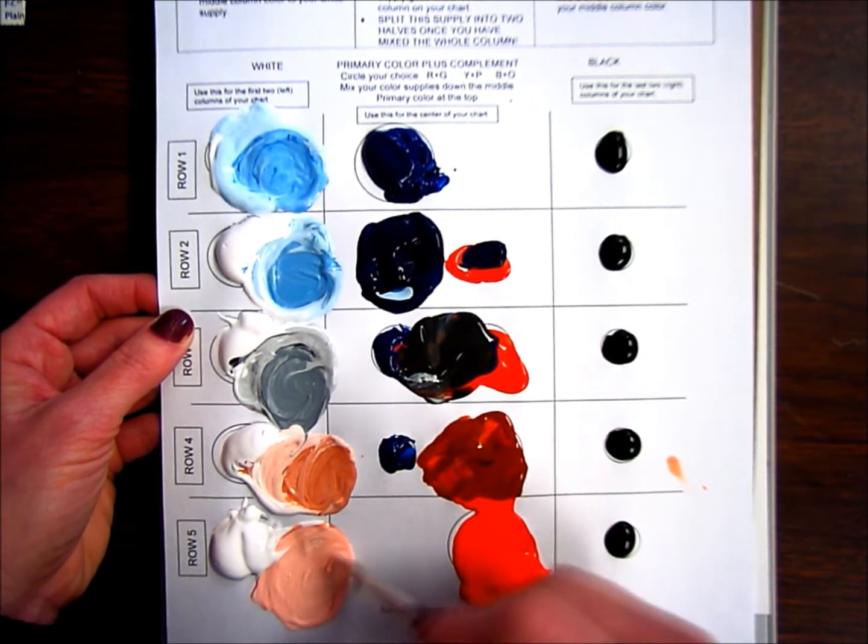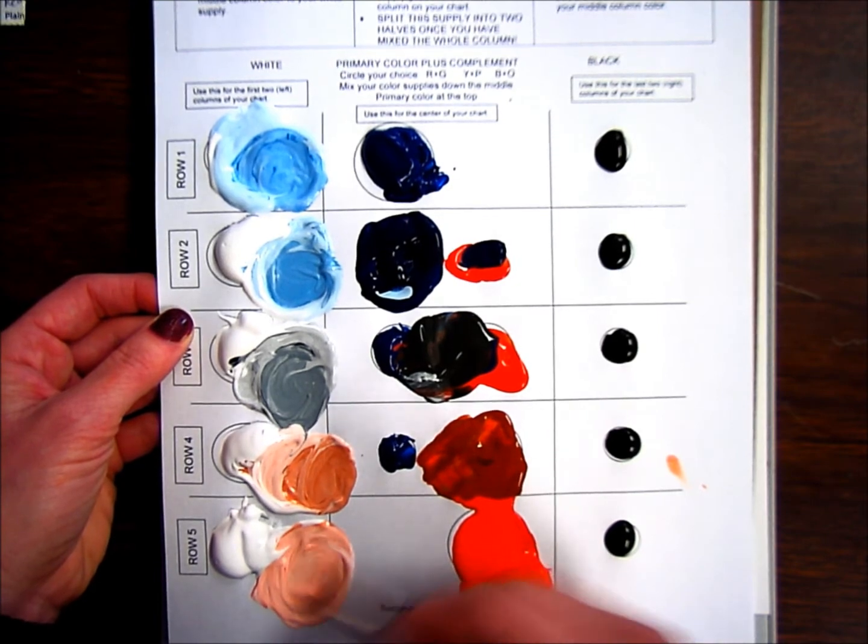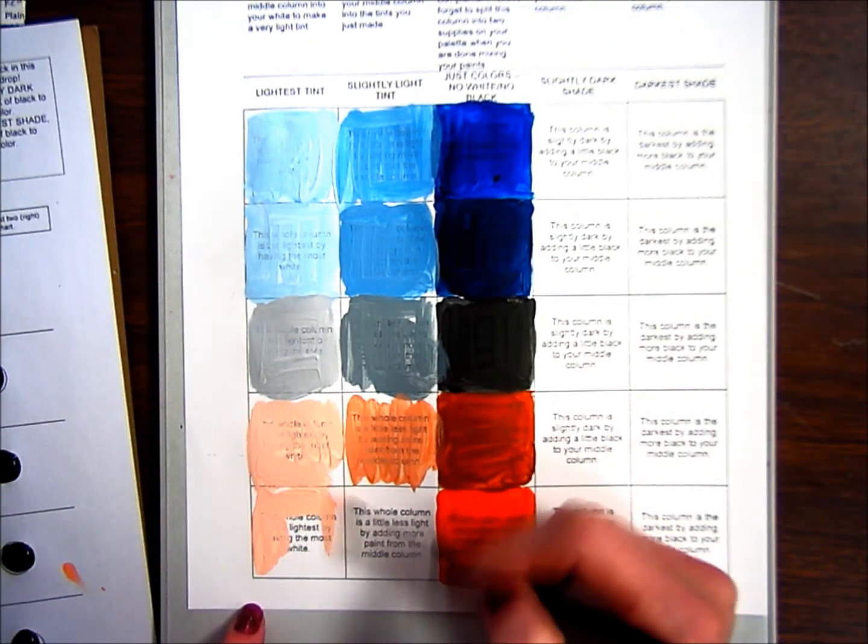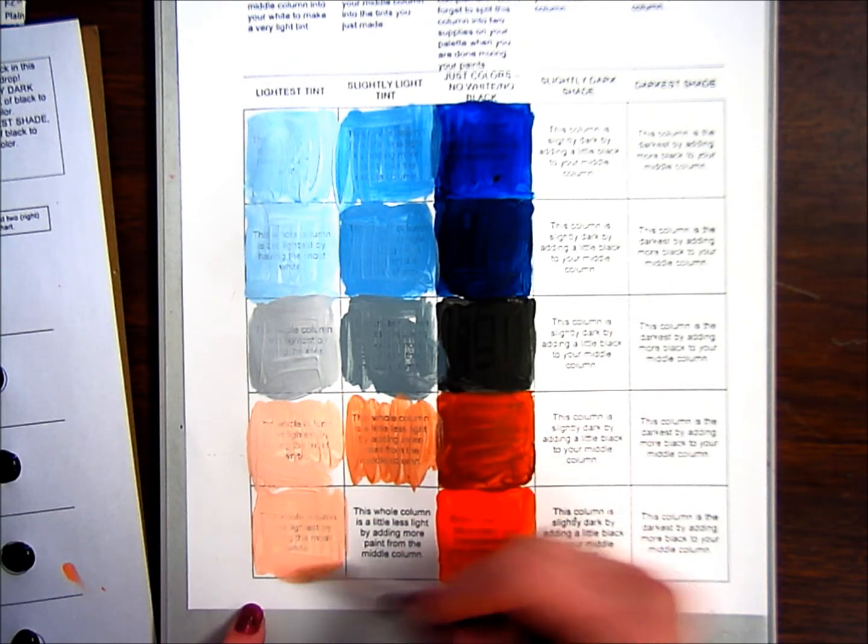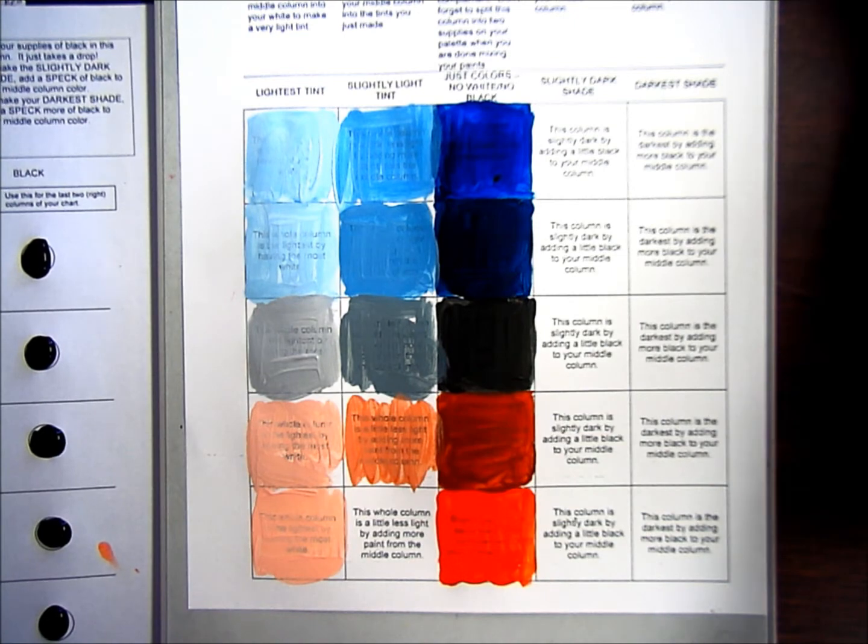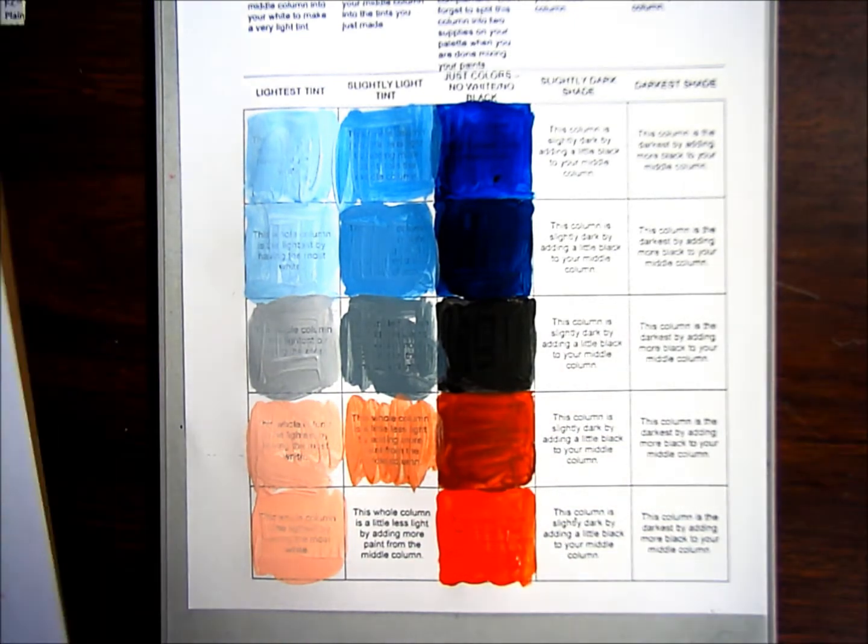Now, you may want to think about changing your water at some point, too. If you have a lot of paint in your water, your water will actually become paint, and it will start coloring your colors. So you're not going to be in control of the colors you're getting. You can tell that light one looks a little bit different from row four.